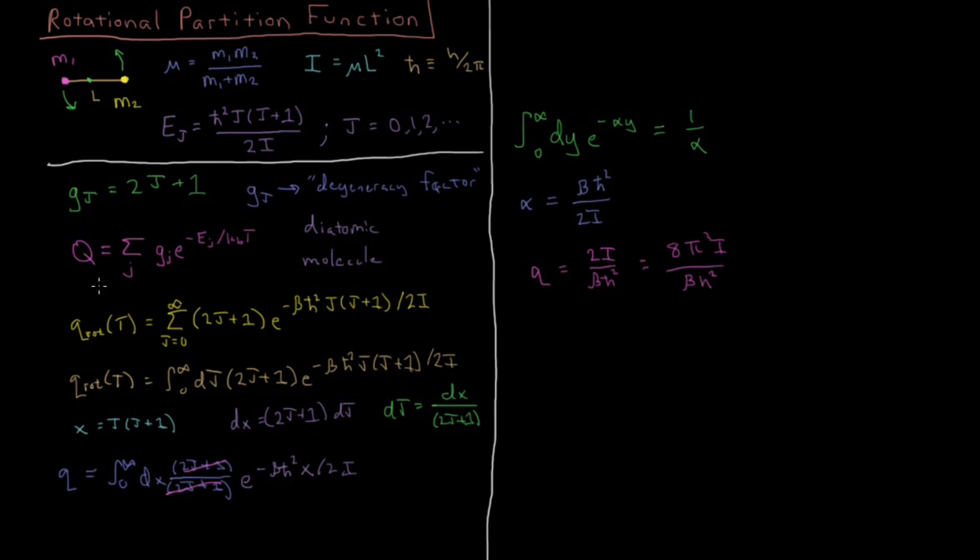If we want to substitute in beta, reminding ourselves that beta equals 1 over Boltzmann constant times temperature, we have a beta on the denominator, so that means we have a kBT on the numerator. Our final result for our rotational partition function is 8 pi squared i kBT over h squared.